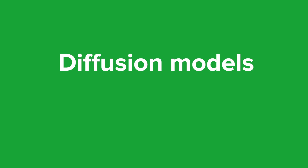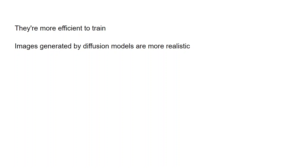Diffusion models don't just modify existing images — they generate everything from scratch without reference to any images you might find on the internet. So if you ask them to generate an image of a dog, they won't just find an image of a dog and add details; they'll create it from scratch based on their understanding of what a dog is. This approach has quite a few benefits: the models are more efficient to train and the images generated are more realistic.